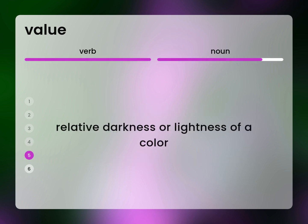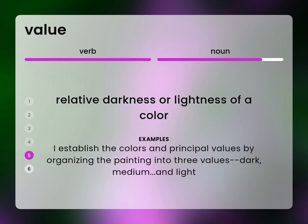Relative darkness or lightness of a color. I establish the colors and principal values by organizing the painting into three values: dark, medium, and light.